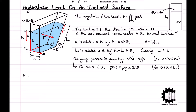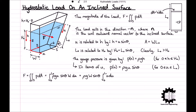Therefore, we can rewrite f equals the surface integral of p with respect to a as the integral of rho g u sine theta w with respect to u from 0 to l0. Furthermore, we can factor rho g w sine theta out of the integral, giving us rho g w sine theta times the integral of u with respect to u from 0 to l0. The integral of u with respect to u is equal to 1 half u squared. So we get rho g w sine theta times 1 half u squared with boundary limits of 0 and l0, and substituting in our boundary limits, we get f is equal to 1 half rho g w l0 squared times sine theta.